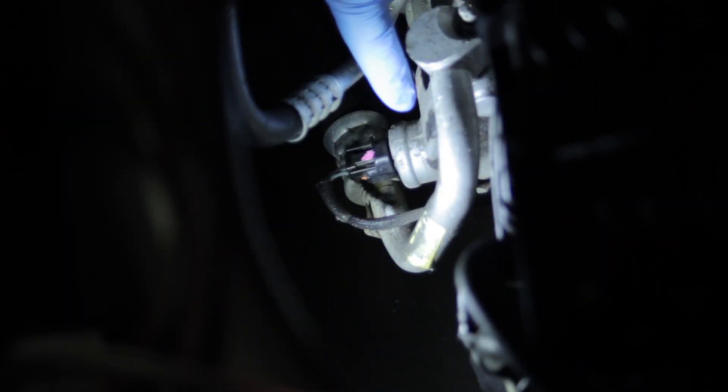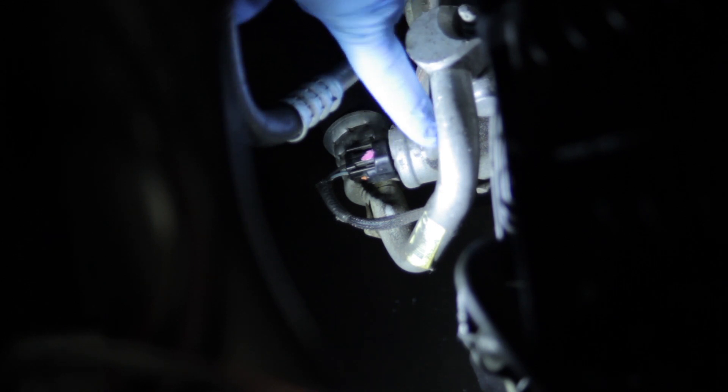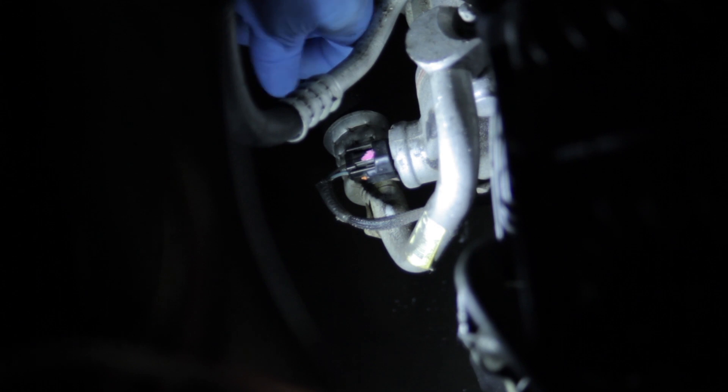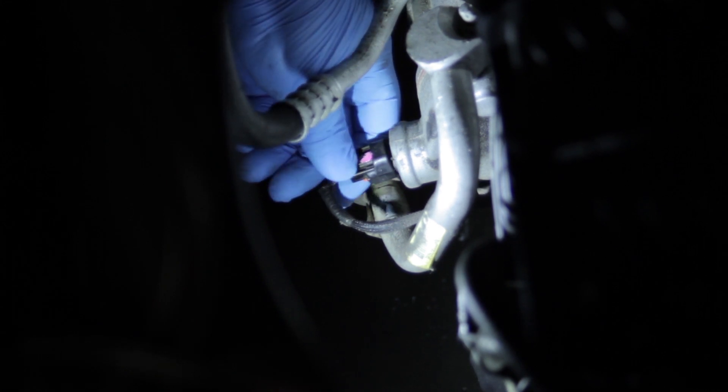Now, looking at the compressor, we can see that the control solenoid is on the back side of the compressor here, and so we can get at the connector relatively easy. Depress the tab, and lift it out of the way here.